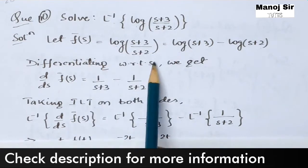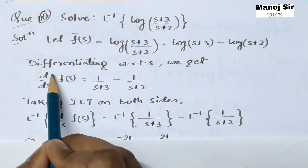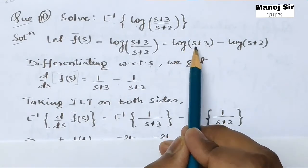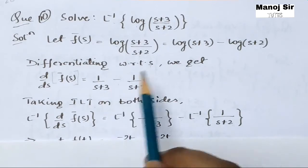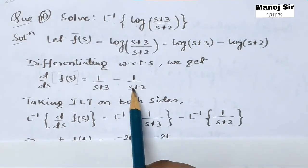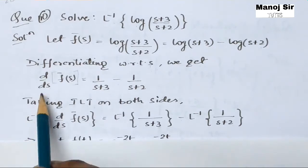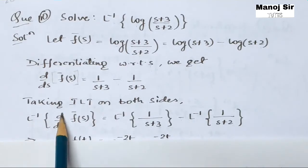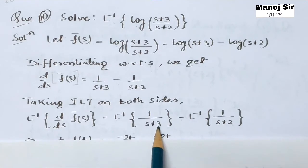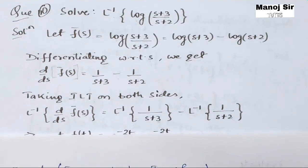Differentiating with respect to s on both sides, we get d/ds of f̄(s) on the left side. The differentiation of log(s+3) with respect to s gives 1/(s+3), and similarly minus the differentiation of log(s+2) with respect to s gives 1/(s+2). Now we take the inverse Laplace transform on both sides, giving inverse Laplace transform of d/ds of f̄(s) equals inverse Laplace transform of 1/(s+3) minus inverse Laplace transform of 1/(s+2).